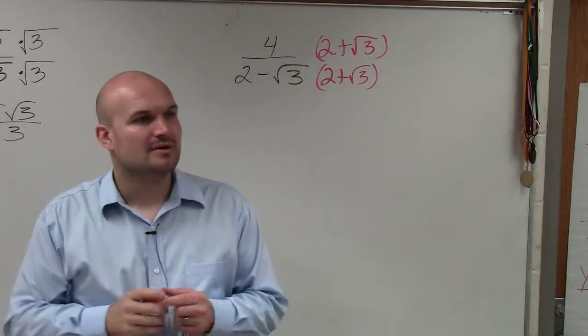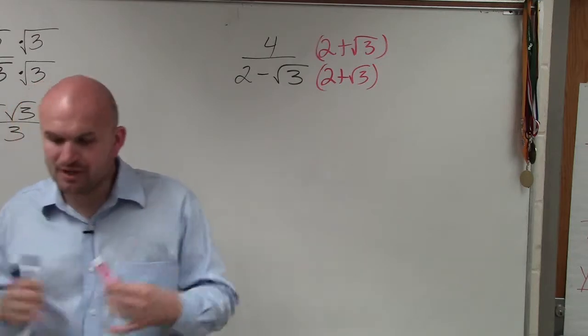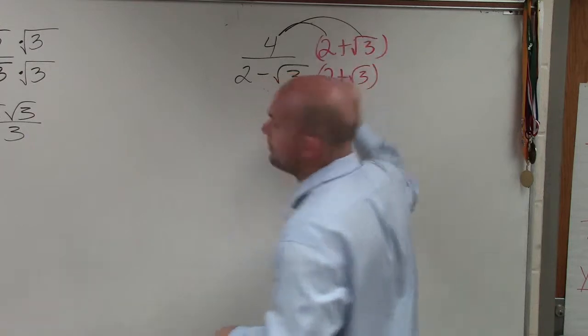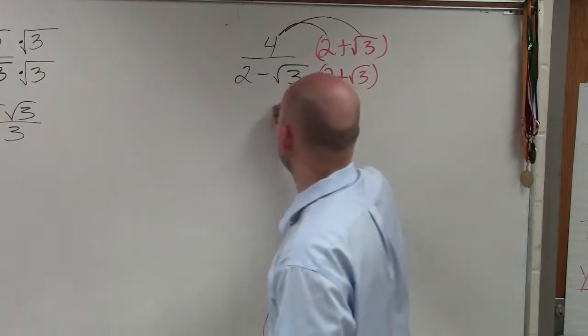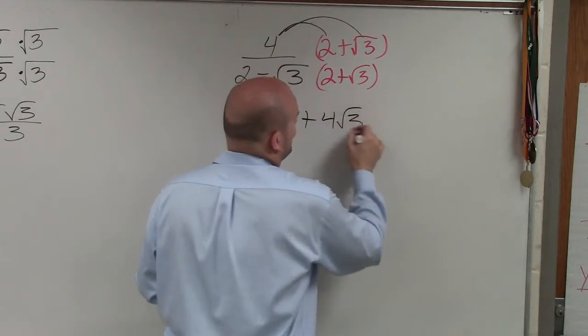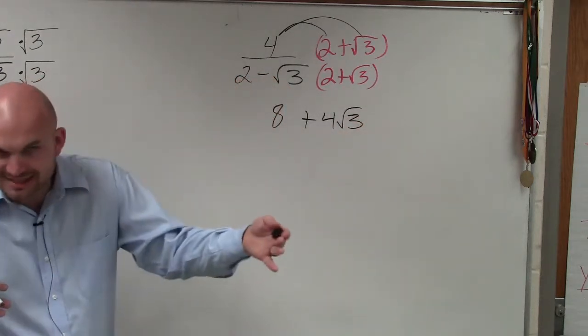Now, what you need to understand, which is very important, is up top I can just apply the distributive property. 4 times 2 is 8. 4 times the square root of 3 gives me 4 square root of 3. You can't multiply the 4 inside of that.